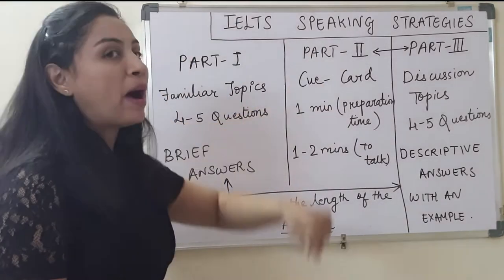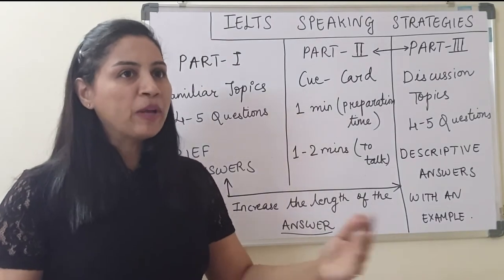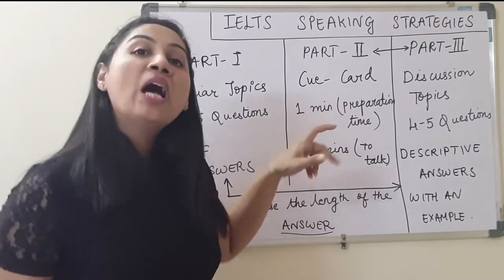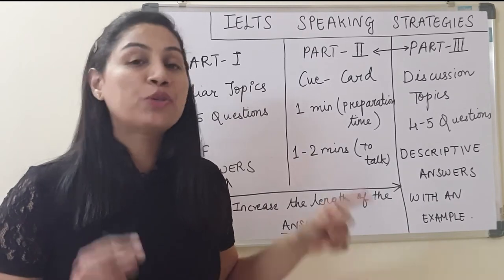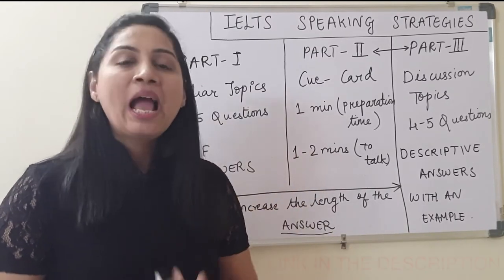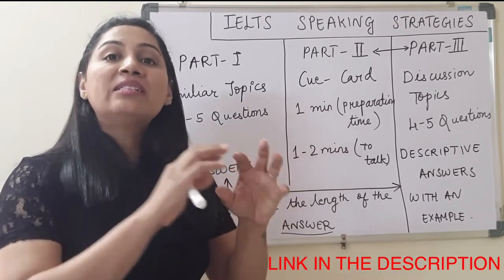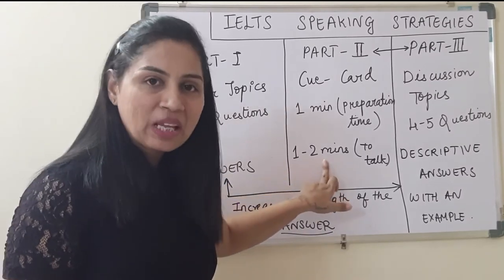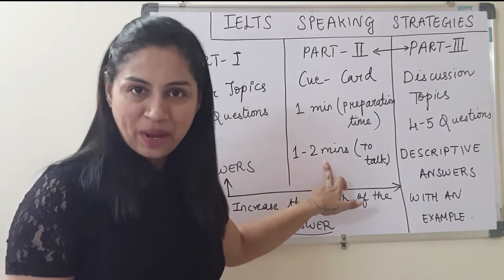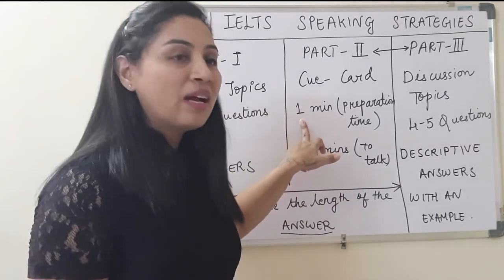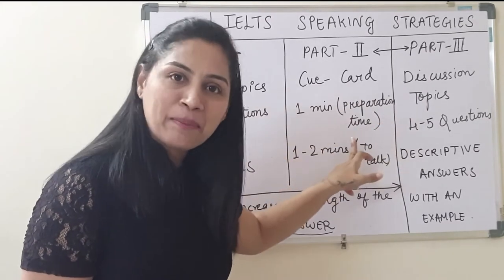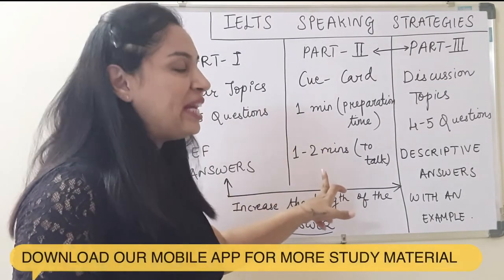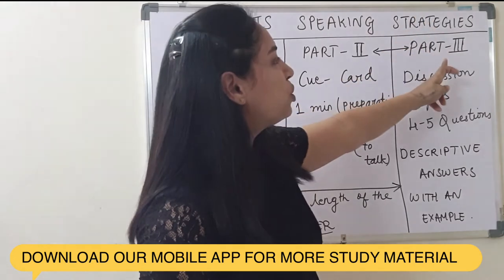Next we would move to part 2, which is the cue card. A topic would be given by the examiner and you will have 1 minute to prepare on that topic. We have also posted a video related to how we can make notes in 1 minute and prepare our talk using all the relevant vocabulary. We have to speak on that topic for 1 to 2 minutes, after which the examiner will take you to part 3.